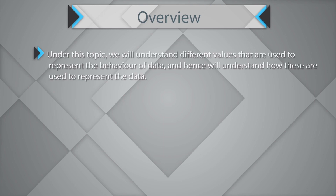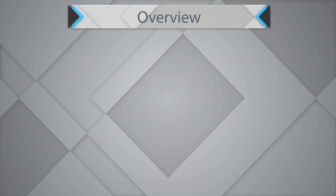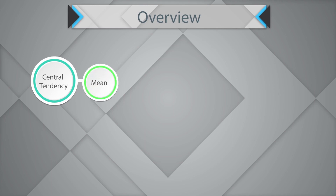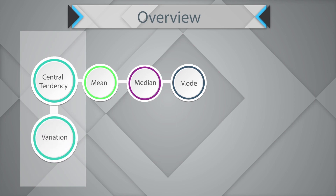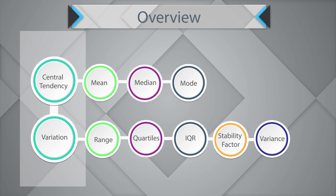Under this topic, we will understand different values used to represent the behavior of data. When you set out to understand basic statistics, there are two measures we would want to study: one, referred to as central tendency, measured through mean, median, or mode; and two, variation or spread, measured through range, quartiles, interquartile range, stability factor, variance, and standard deviation.